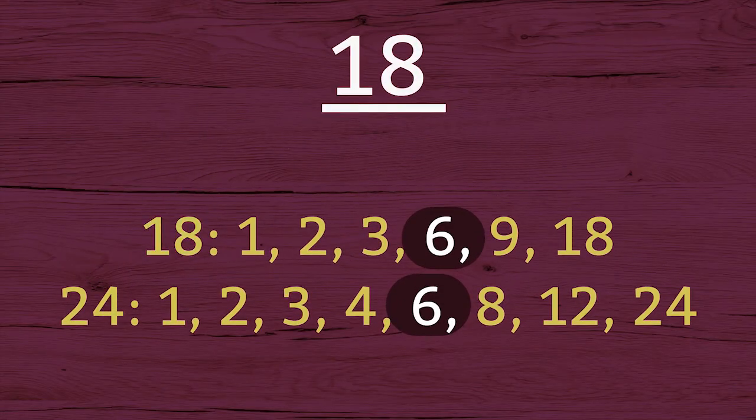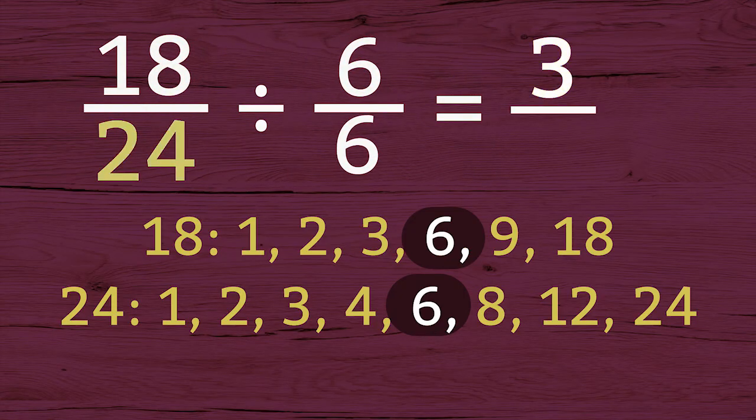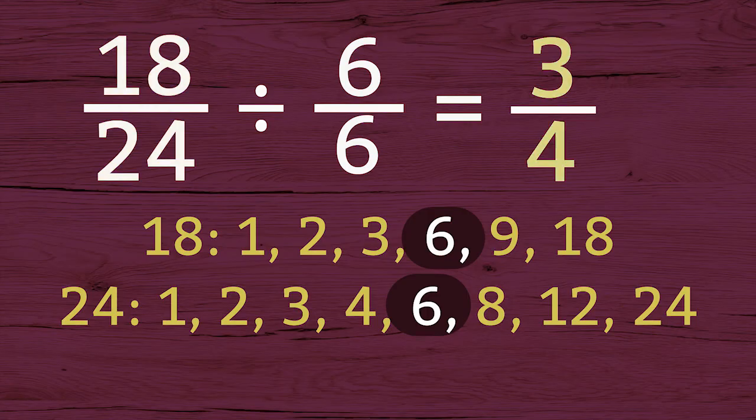Divide both the numerator and the denominator of the fraction 18 24ths by 6. 18 divided by 6 equals 3. 24 divided by 6 equals 4. The simplest form of 18 24ths is 3 fourths.